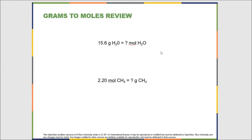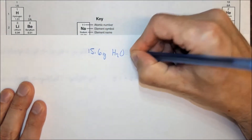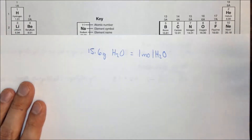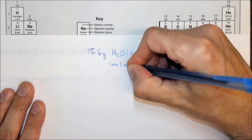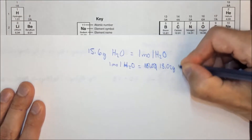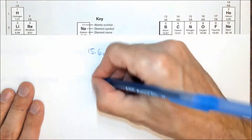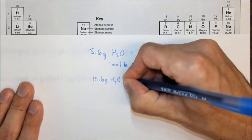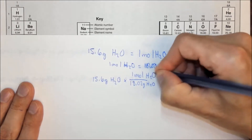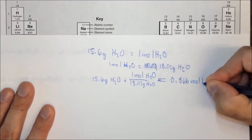Here we have a couple of examples of just converting grams to moles, which is completely a review. If we have 15.6 grams of water and we want to find out how many moles of water it is, we need to know the equality or the molar mass. We have two hydrogens, which is 2 times 1.01 plus 16.00. Using the periodic table, we know that one mole of water is equal to 18.02 grams of water. Starting with 15.6 grams of water, we put the 18.02 grams of water on the bottom and the one mole of water on the top. Multiply by the top, divide by the bottom, and to three sig figs there are 0.866 moles of water in this example.